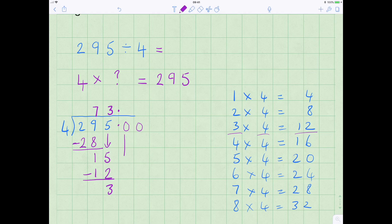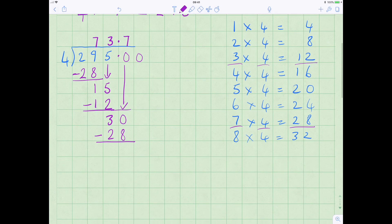We then bring the 0 down. So the next question is, how many times does 4 go into 30? 7 times 4 is 28, so we're saying 7 times, and 7 times 4, as I said, is 28, so we need to take that away from the 30, as we've done before.